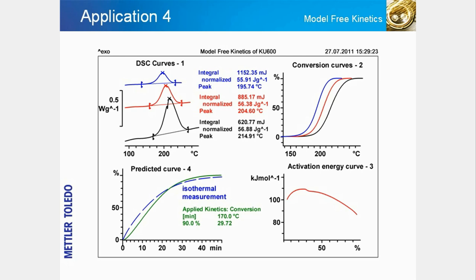In step 3, the model-free kinetics program calculates the conversion-dependent activation energy from the conversion curves. In this example, the activation energy changes during the course of the reaction, indicating that more than one mechanism is involved. The activation energy calculated is therefore referred to as the apparent activation energy. In step 4, the results from the preceding steps are used to make predictions about reactions — for example, to predict the conversion curve as a function of time at an isothermal temperature of 170 degrees. From the curve and table, the time required to reach 90% conversion is approximately 30 minutes.